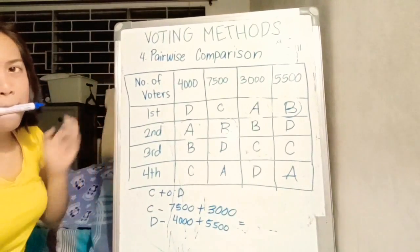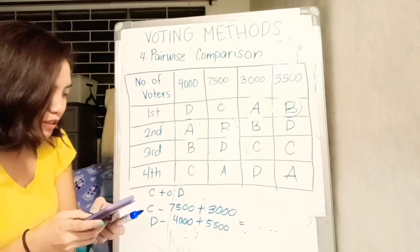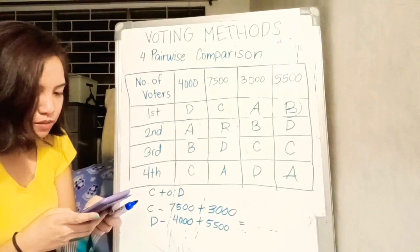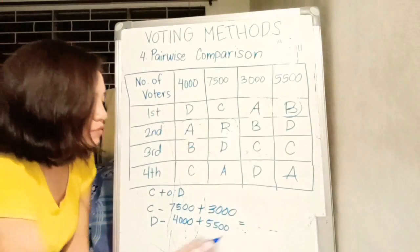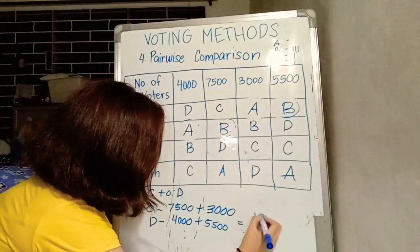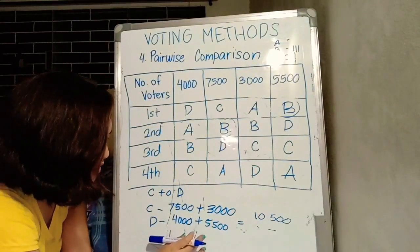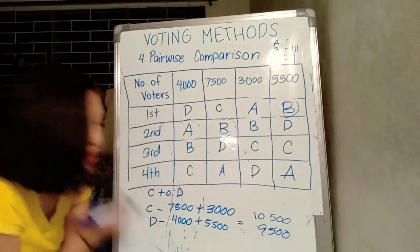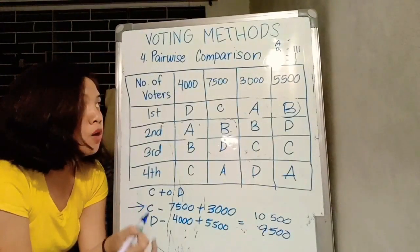I'm sorry, I suck at mental math. But we have a calculator. Mas mabilis tayo magcompute. 10,500. And 4,000 plus 5,500 is equal to 9,500. The winner for this pairwise comparison is candidate C. We will award 1 point.